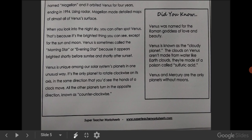When you look into the night sky, you can often spot Venus. That's because it's the brightest thing you can see, except for the sun and moon. Venus is sometimes called the morning star, or evening star, because it appears brightest shortly before sunrise and shortly after sunset.